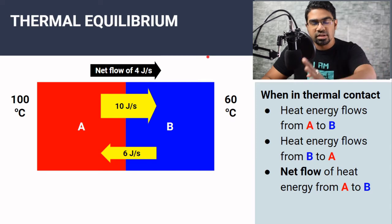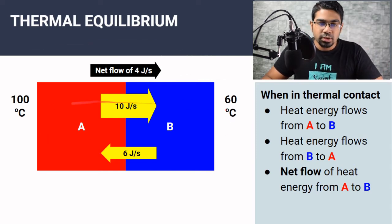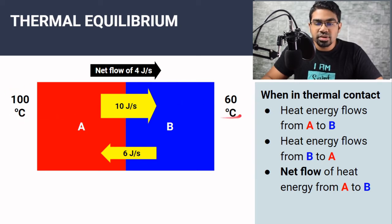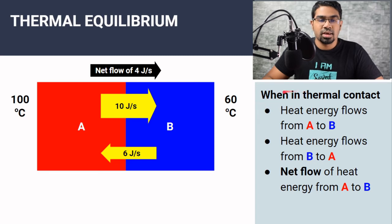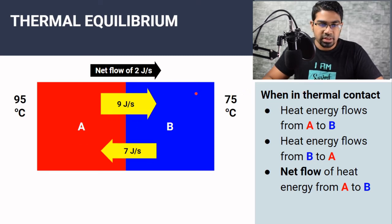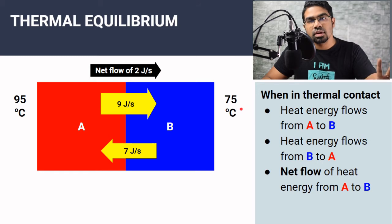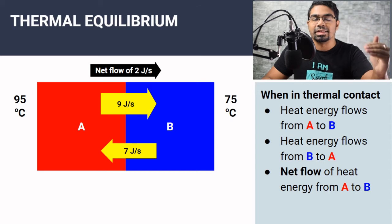Working towards thermal equilibrium — using the same scenario: initially A is 100 degrees Celsius and B is 60 degrees Celsius. There is a net flow of heat going from A to B, so naturally temperature A will start to drop and temperature B will start to rise. In the second instance, the temperature of A has dropped to 95 and the temperature of B has risen to 75. Now, a common wrong assumption is that temperatures drop and increase at the same rate — this is not true.